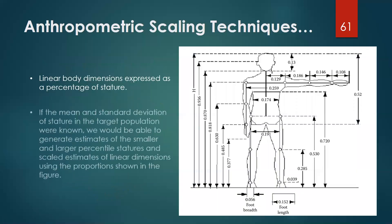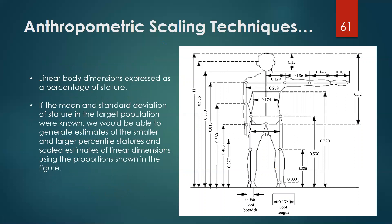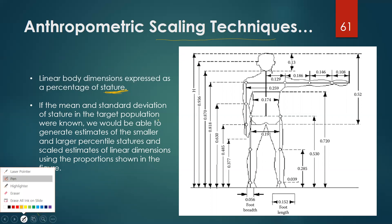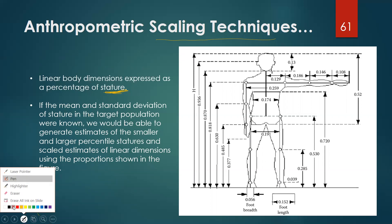There is another way to use scaling techniques: linear body dimensions are expressed as a percentage of stature, where stature is the reference. If the mean and standard deviation of stature in the target population are known, we can generate estimates of smaller and larger percentile stature values, and scaled estimates of linear dimensions using the proportions shown in the figure. Knowing the height's mean and standard deviation allows us to find different percentile values — for example, the fifth percentile equals H minus 1.64 times the standard deviation of height.